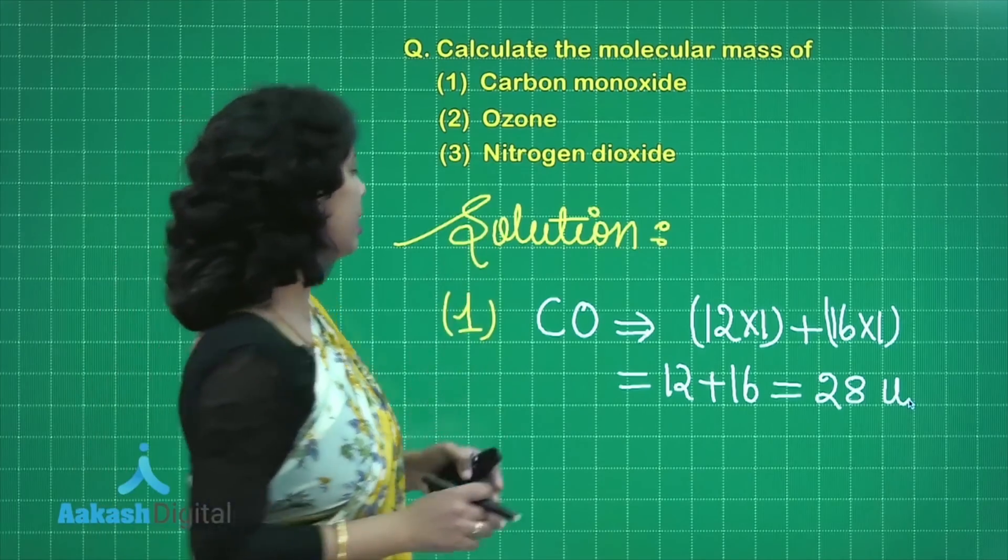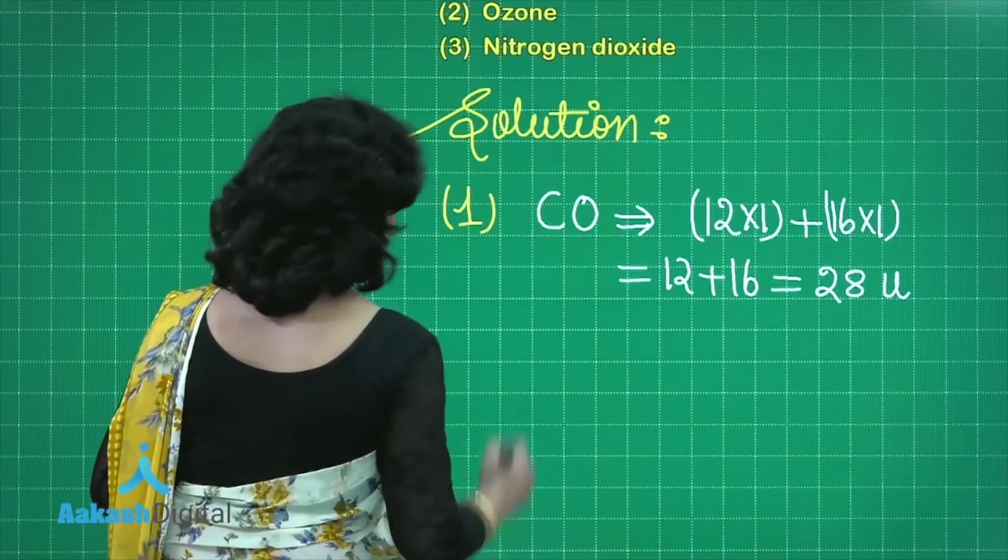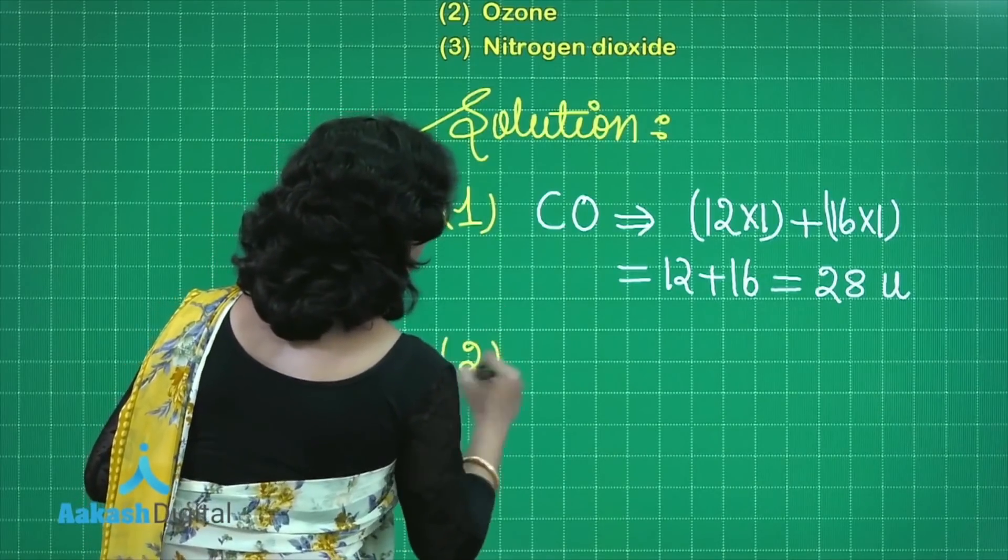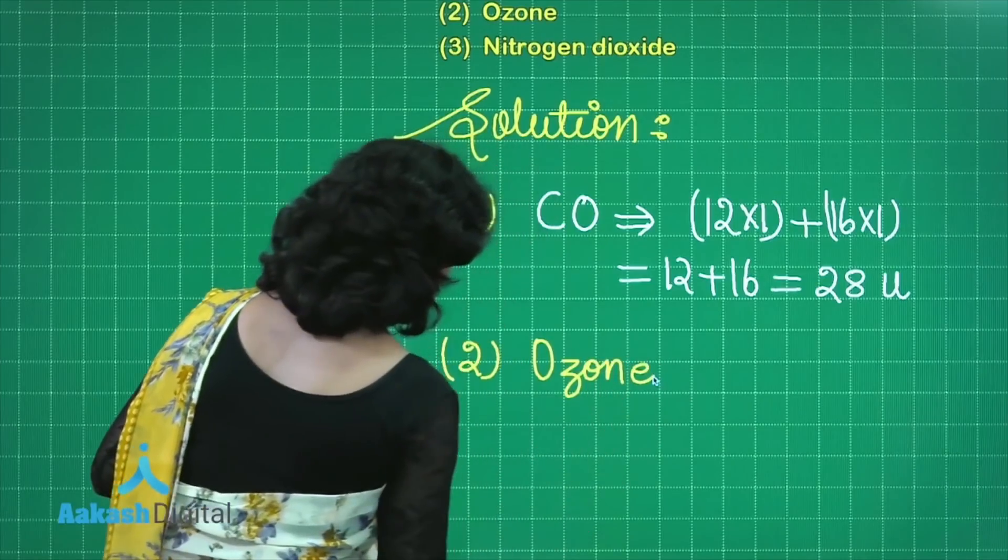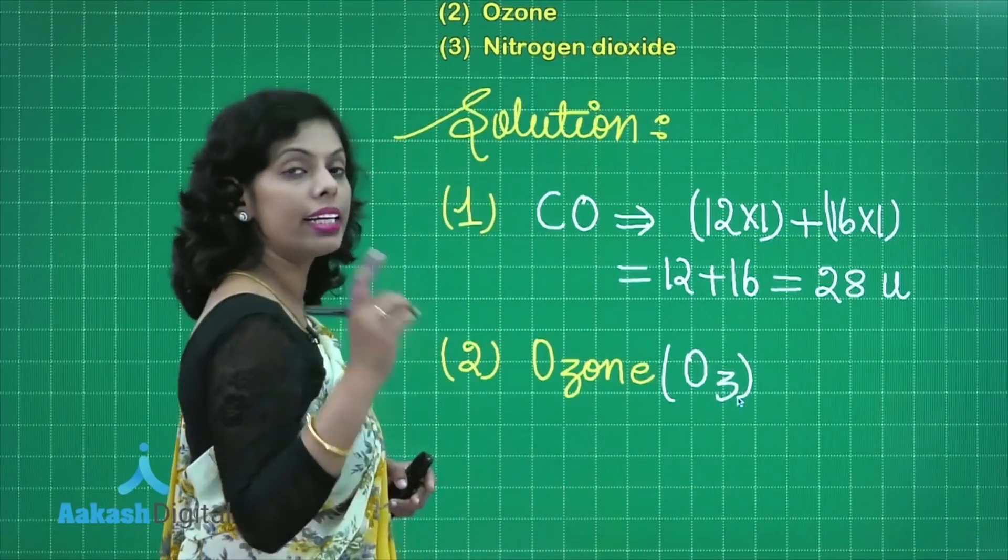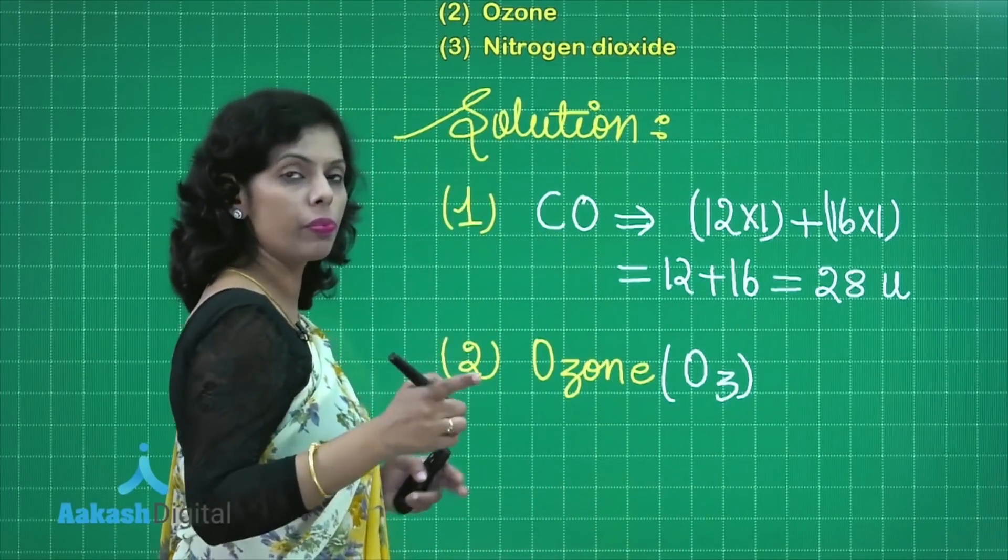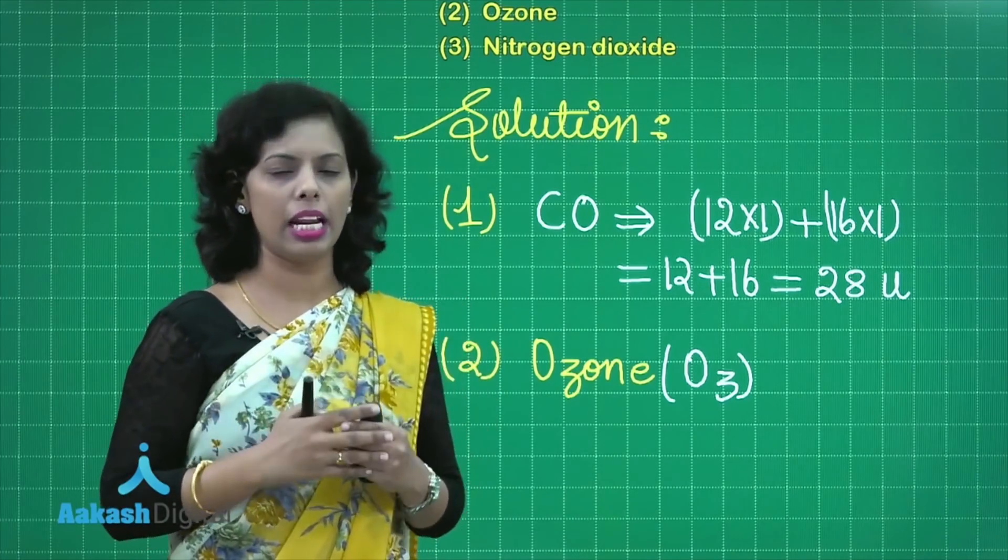Now let's take the next part also, that is ozone. The second one, ozone, that is O3. That is allotrope of oxygen. Allotrope is basically the different physical forms of the same element.